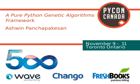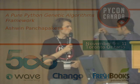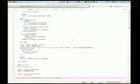Ashwin, also known as pancakes, is going to be talking about a pure Python genetic algorithms framework. Hi, I'm Ashwin. I'm a graduate student from the University of Ottawa, and I wrote a pure Python evolutionary algorithms framework.